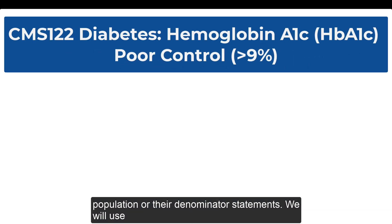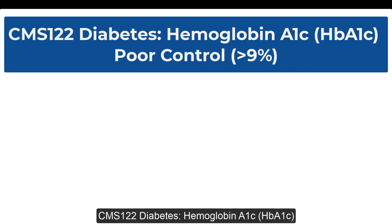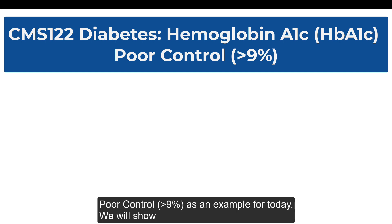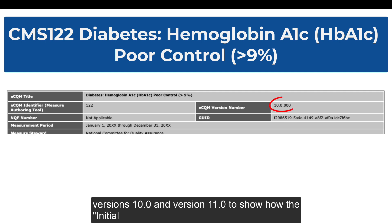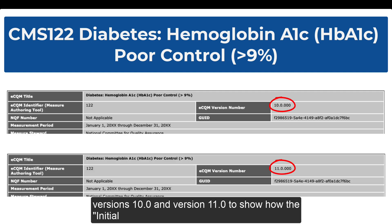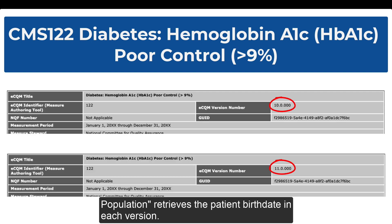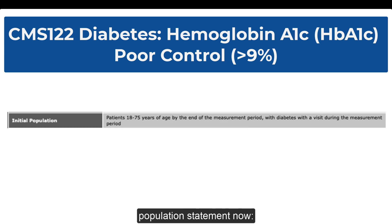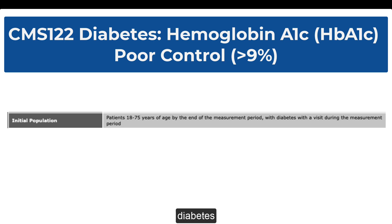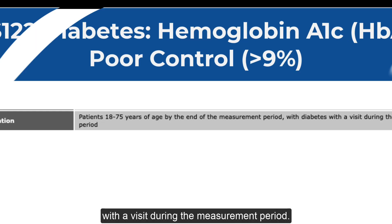We will use CMS-122, Diabetes Hemoglobin A1C Poor Control, as an example for today. We will show versions 10 and version 11 to show how the initial population retrieves the patient birth date in each version. Let's review the initial population statement now: the patient's age 18 to 75 years of age with diabetes with a visit during the measurement period.